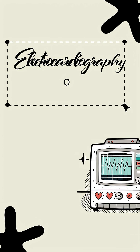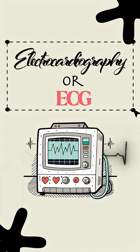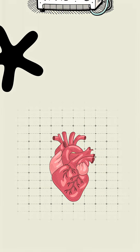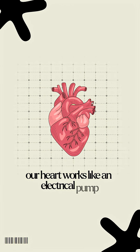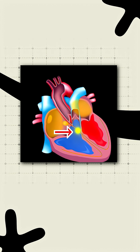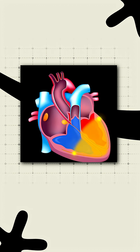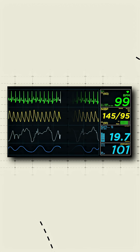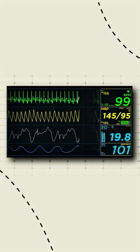Electrocardiography, or ECG, is simply the recording of the heart's electrical activity. Remember, our heart works like an electrical pump. First the impulse is generated, then it spreads, and finally the muscle contracts. ECG captures all of this in waveforms.